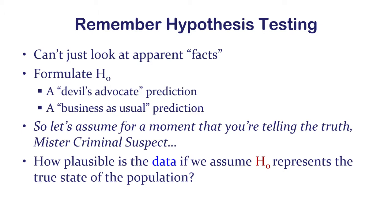The null hypothesis in traditional hypothesis testing approaches things with conditional probability: how plausible is the data we've observed, or more extreme, if we assume the null hypothesis is telling us what's really going on in the population? A p-value is the probability of our data or data more extreme given the null hypothesis is true — probability of data given H0.